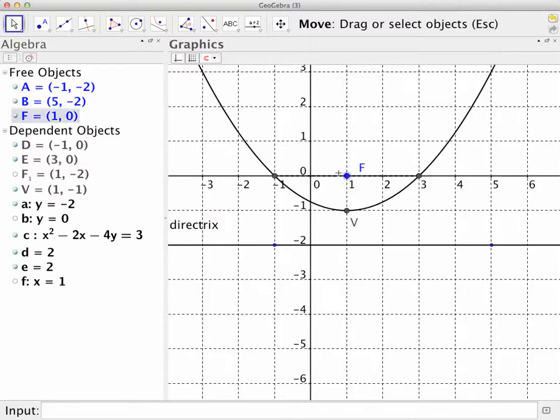Now once we know the value of P, we also know that the length of the segment, or the chord actually, that passes through the focus and is parallel to the directrix, the length of that chord, so from here to here, is equal to 4P.